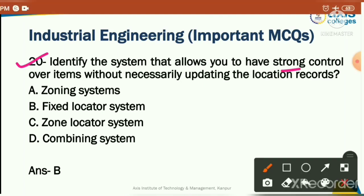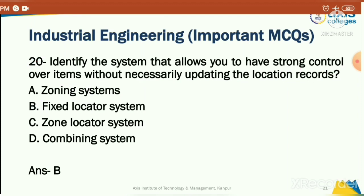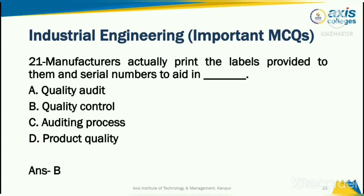Identify the system that allows you to have strong control over items without necessarily updating the location records. Options: joining system, fix locator system, zone locator system, or combining system. The correct answer is fix locator system.